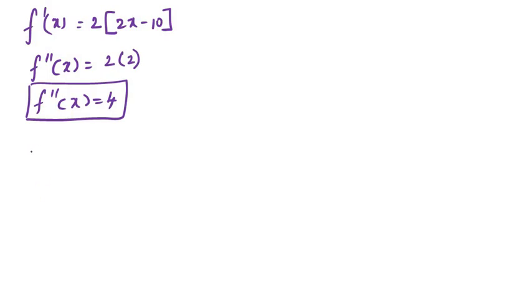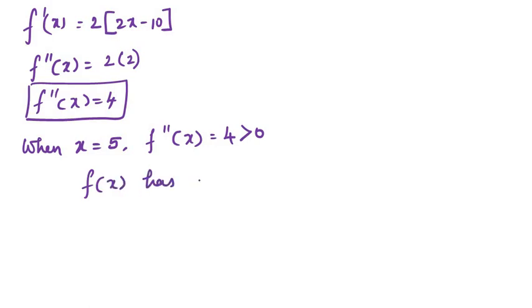When x is equal to 5, f double dash of x is equal to 4, which is greater than 0. So f of x has local minimum at x is equal to 5.